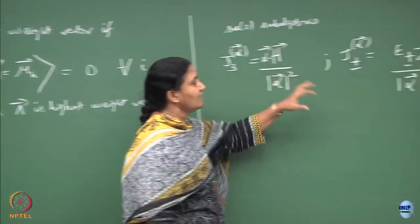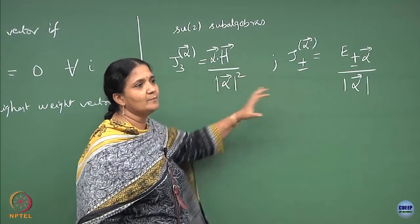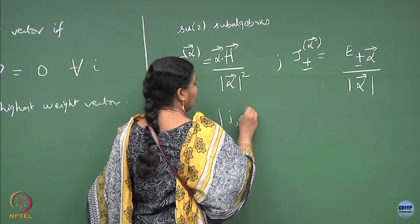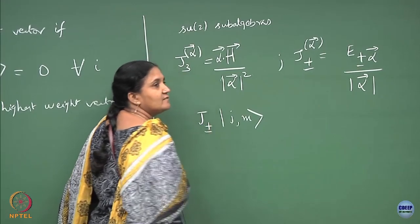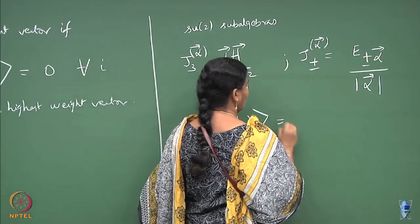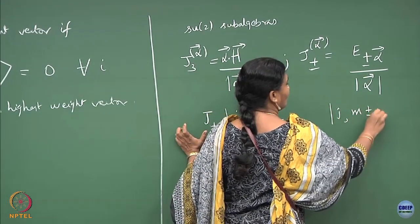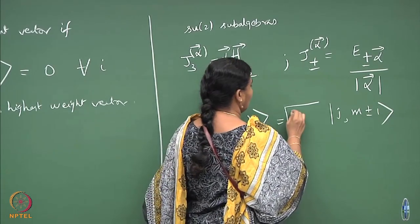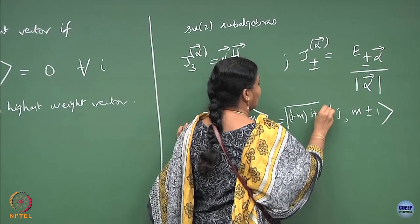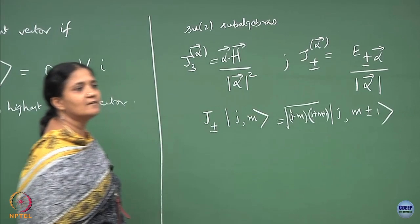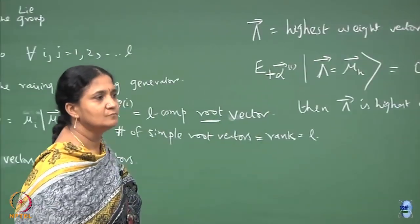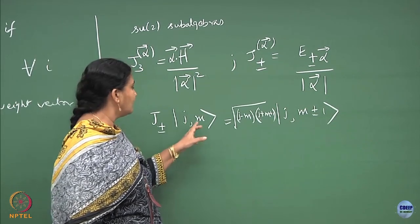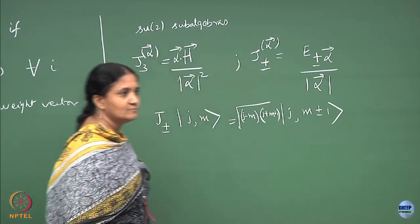Similarly, J_plus and J_minus associated with the same root vector will be E plus or minus alpha vector divided by mod alpha. To verify, check that the SU(2) algebra is satisfied. The interesting thing is that once you do this, you know how J_plus and J_minus act on any arbitrary state — analogous to how J_plus or minus acts on |j, m⟩ with square root coefficients.